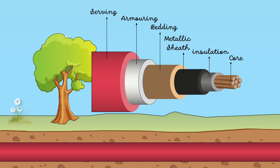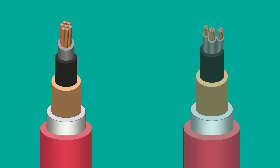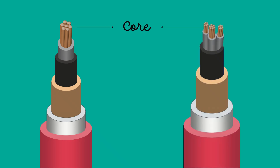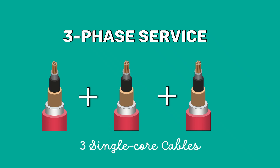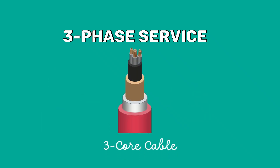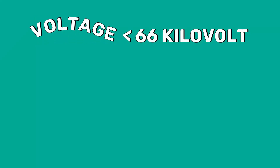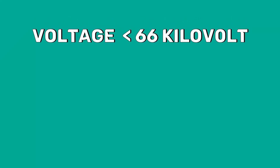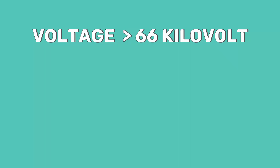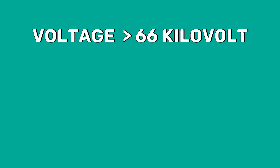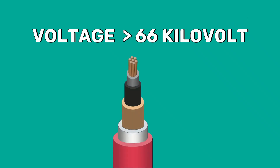The cable may have one or more than one core depending on the type of service for which it is intended. For a three-phase service, either three single-core cables or three-core cables can be used depending upon the operating voltage. For voltages up to 66 kV, the three-core cable is preferred due to economic reasons. However, for voltages beyond 66 kV, single-core cables are used.